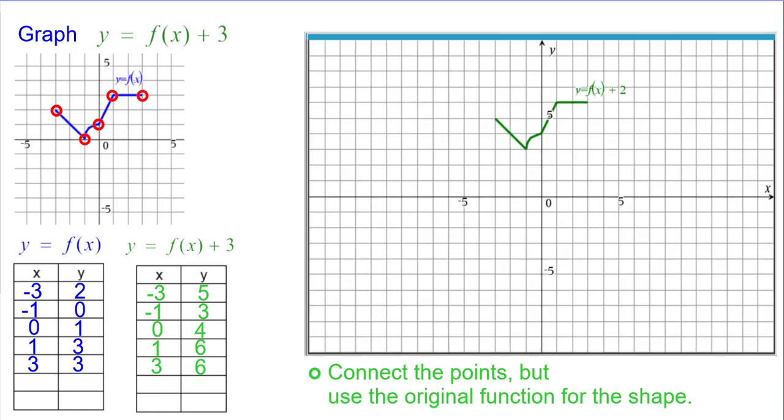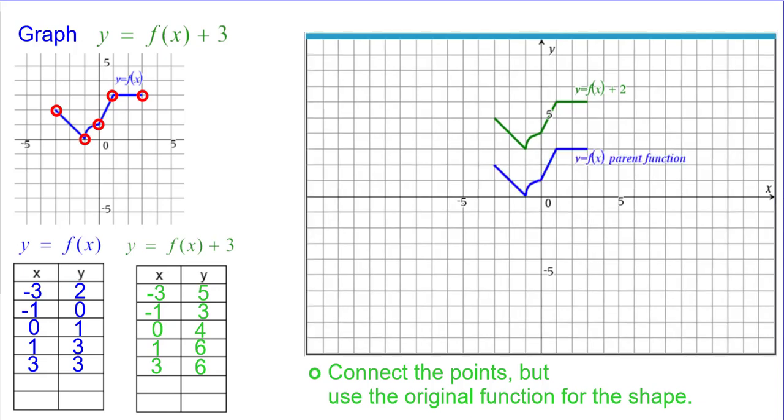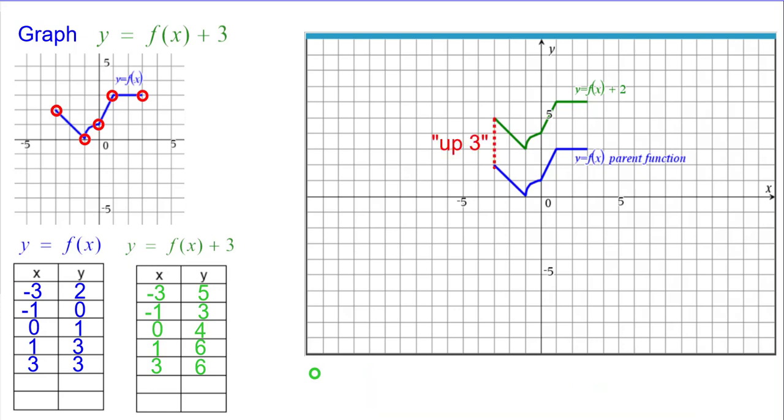And this is what y = f(x) + 3 looks like. Comparing that to the original parent function, we can see that going from blue to green, you're going up 3 from not only these points but from every point. This demonstrates the vertical shift. Thank you.